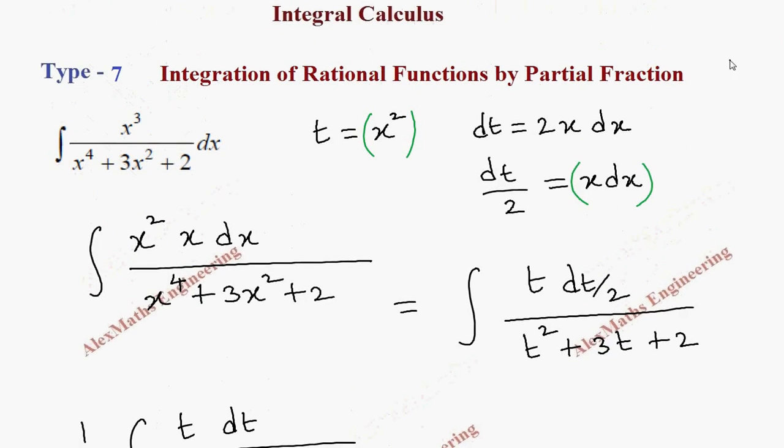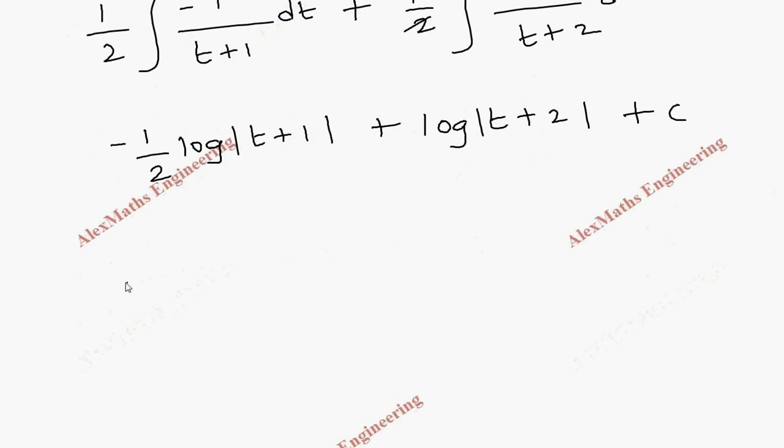And the value of t, which we have taken in the initial step, is x squared. We are going to replace it. So, minus 1 by 2, log mod x squared plus 1 plus log mod x squared plus 2 plus c.